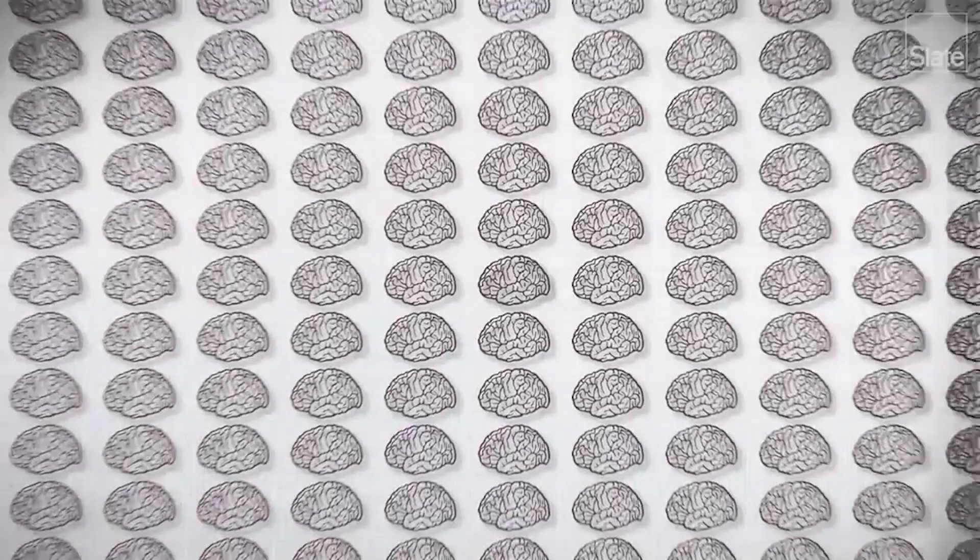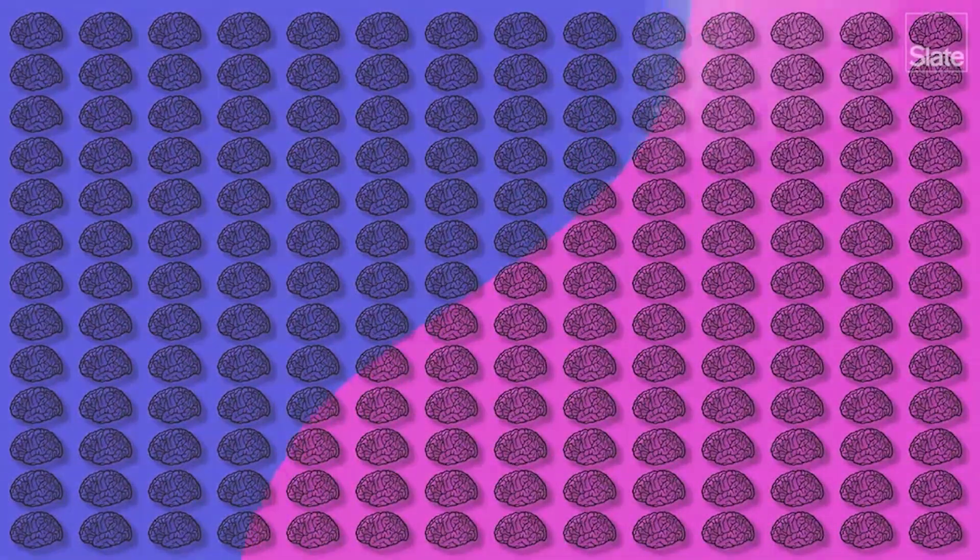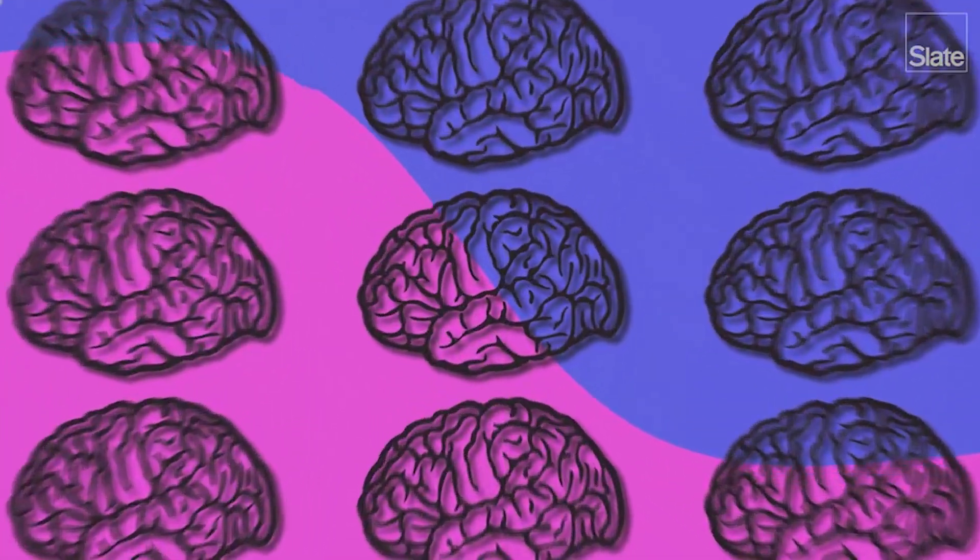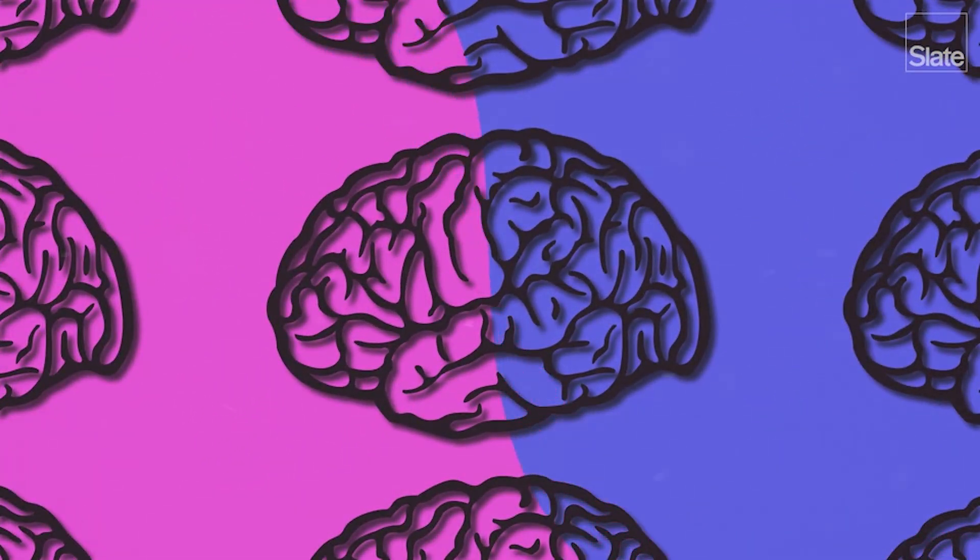Instead, their analysis showed that it's extremely rare for a brain to show any masculine or feminine features. Nearly all the brains they looked at contained a mix of both. That's right. These brain features are not dichotomous. Rather, they occur on a spectrum, from more male to more female.